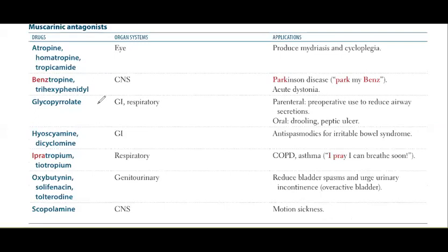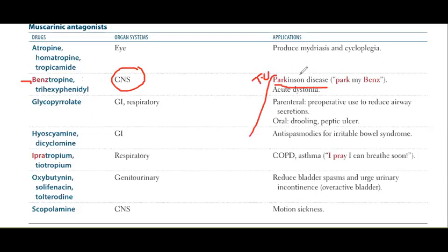After this pharmacology lecture, there will be a 10-minute break then biochemistry vitamins class, studying B7, B9, and B12. Now, benztropine — very important — it has an effect on the central nervous system. The mnemonic is 'park my benz': benztropine is used in Parkinson's disease. This is asked in previous MCQs — remember benztropine with Parkinson's disease.